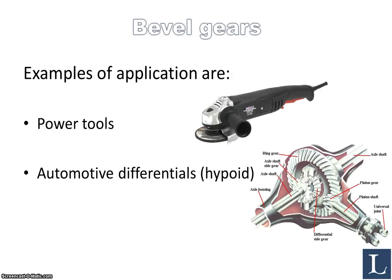There are many applications where you will find bevel gears. For instance, in power tools, where you have a change in direction of the axis versus the axis of the motor driving the power tool. Also in automotive differentials, you will find a hypoid gear, like in this one — this is the differential right here — with the hypoid gear system with the pinion and the ring gear shown right there.